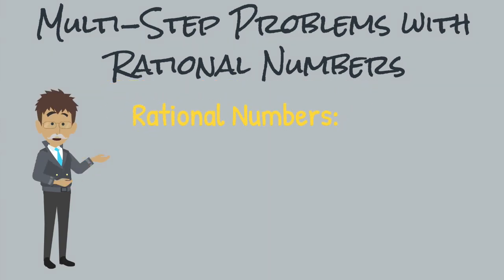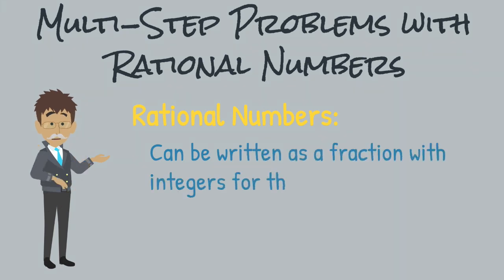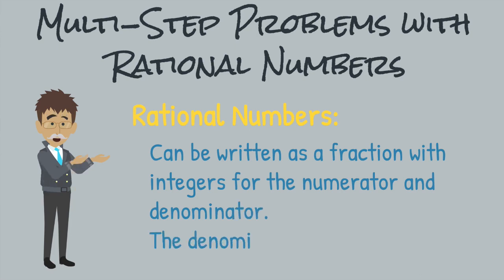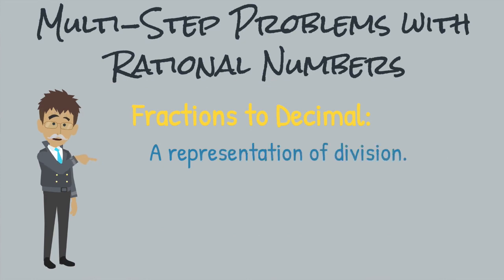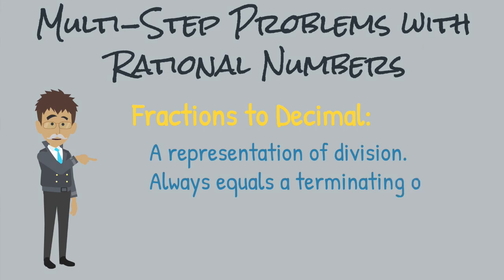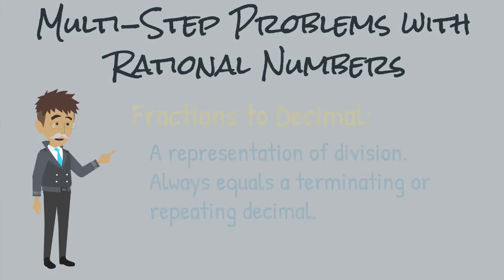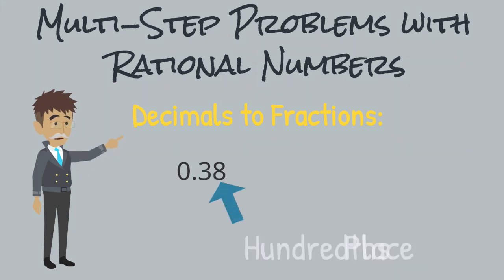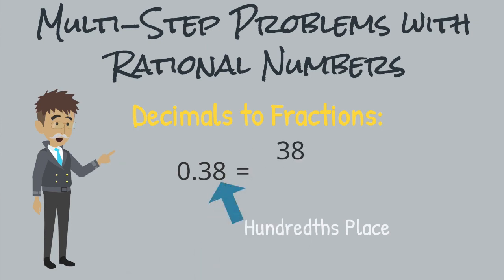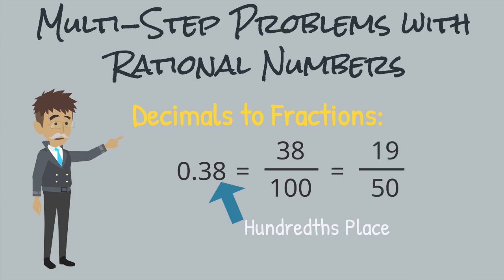A rational number is a positive or negative number that can be written as a fraction, a over b, where a and b are integers and b does not equal zero. Fractions are another way of representing division. If we divide the numerator by the denominator, we convert the fraction into its decimal form. These decimals will always either terminate or repeat. Converting a number in decimal form to a fraction involves using the place value of the rightmost digit. We write the decimal component as the numerator and the associated power of 10 as the denominator, then simplify the fraction.